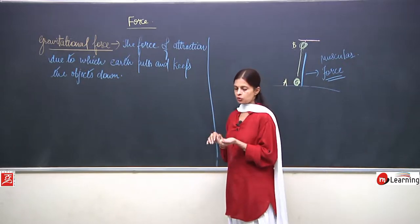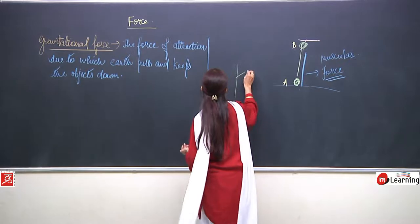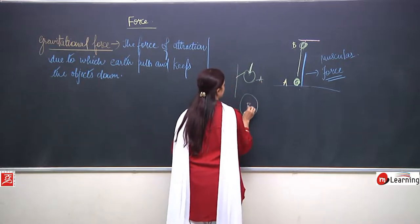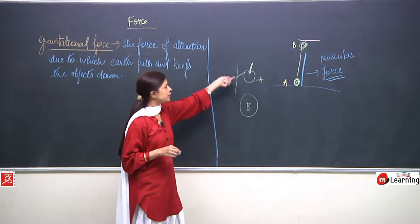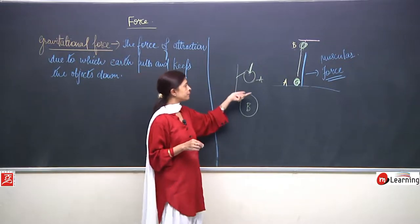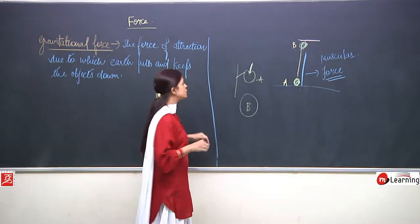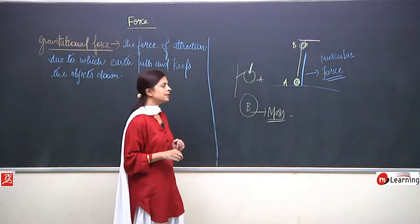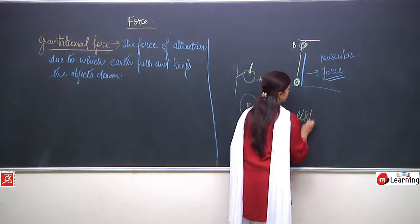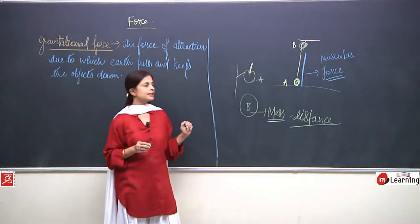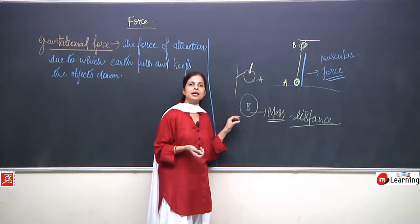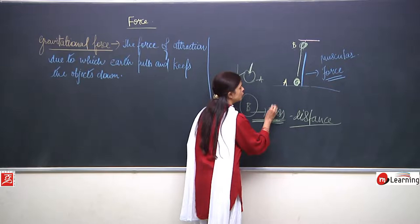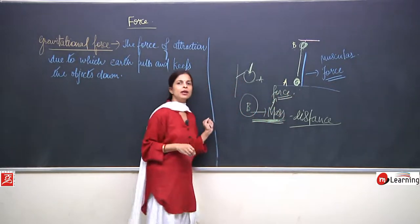But then why is only the earth able to pull things? Suppose this is an apple and this is the earth — there will be an attraction force between them. But the gravitational force depends upon two things: it depends upon the mass of the substance, and it depends upon the distance of the substance. If the distance is less, the force of attraction will be more. If the mass is more, more force will be exerted.